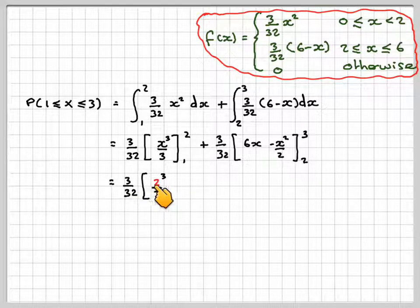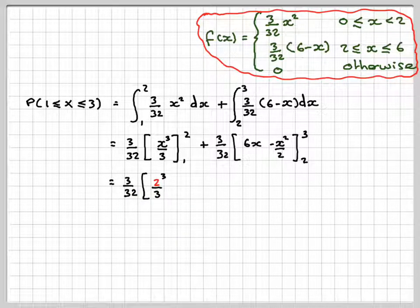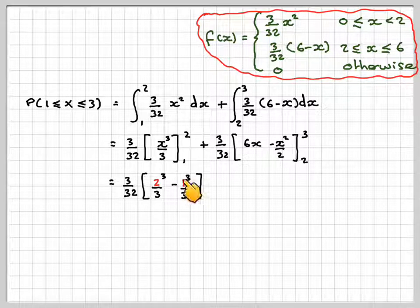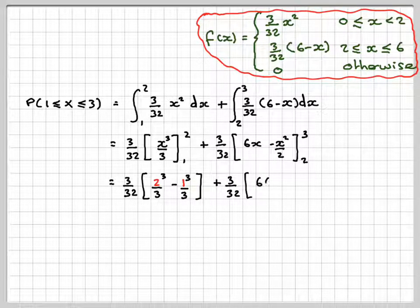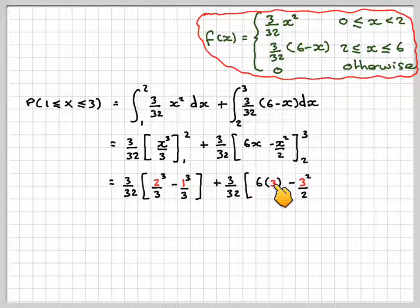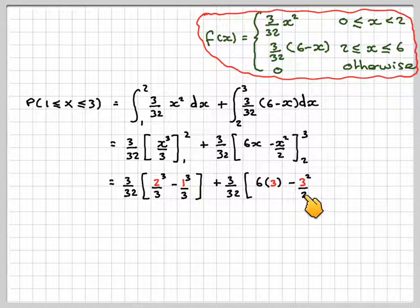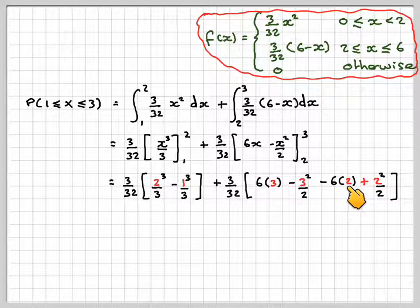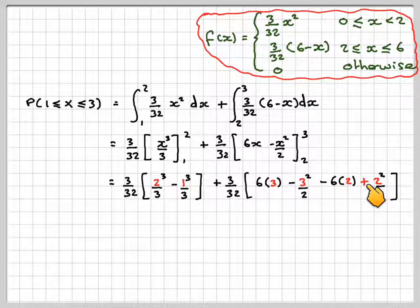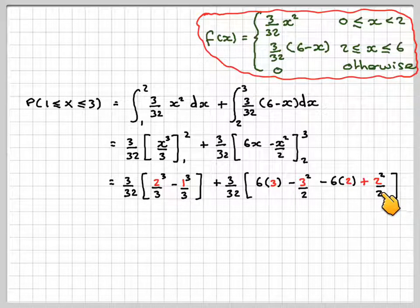3/32 of 6x minus x²/2 from 2 to 3. So that's 3/32(2³/3 minus 1³/3) plus 3/32(6 times 3 minus 3²/2). We need to substitute 3 in and then minus 6 times 2 plus, be careful with the plus, 2²/2.